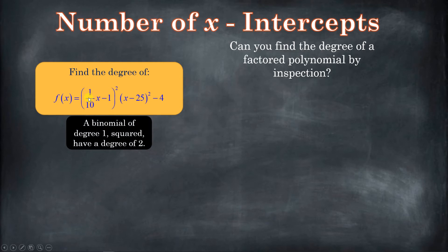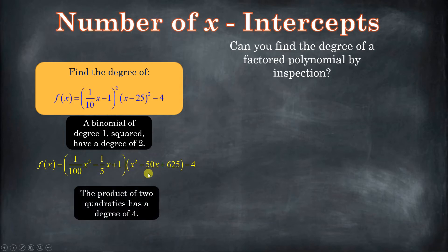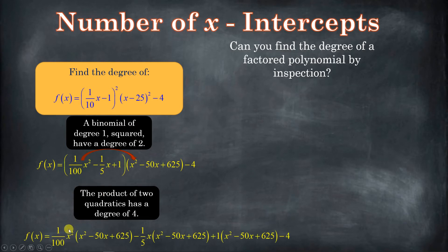What we have is a binomial times another binomial, and each of those binomials is squared. This binomial has a degree of one, and so does this one. So these are both going to have a degree of two after squaring. When those multiply together, it's going to end up having a degree of four. I squared these two binomials just to show you — when you square x minus 25, its degree is two. A degree of two times another degree of two gives degree four. When you multiply x squared times x squared, that's x to the fourth. That's going to be our leading term.